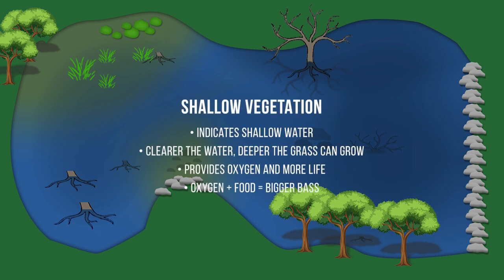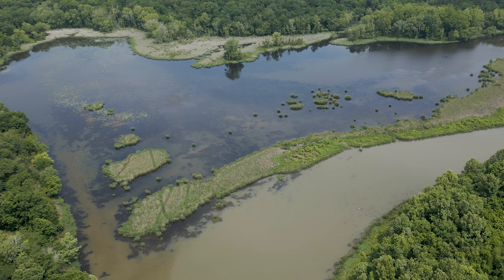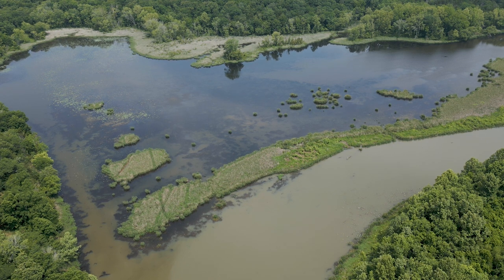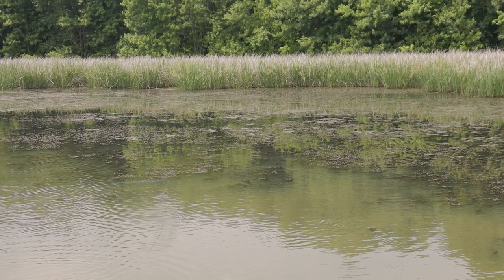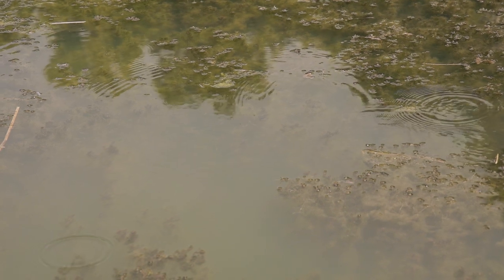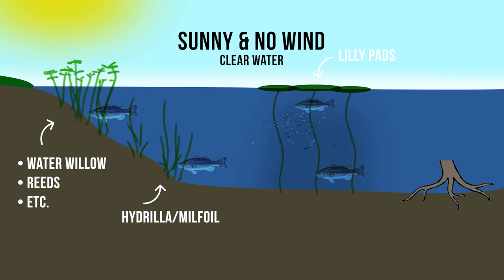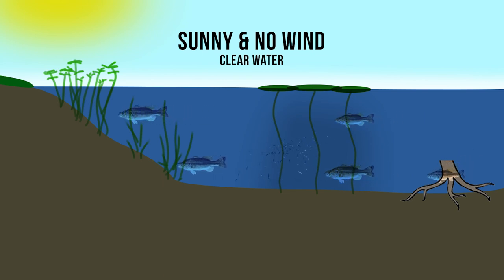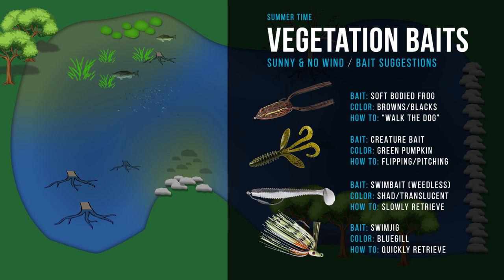Lakes with vegetation as a primary cover typically have cleaner water — vegetation actually clears water. Vegetation also needs sunlight penetration to grow, so it's typically going to be shallow. If your whole lake is covered in vegetation, it's primarily all shallow because light can't penetrate deep enough to grow grass everywhere.